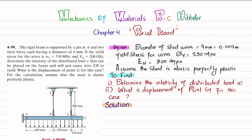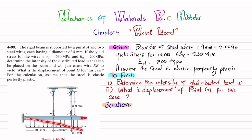Assume the steel is elastic and perfectly plastic. You can see the beam is pin-supported at point A. At points B and C there are two steel wires of 4 millimeter diameter. There is a distributed load over the whole length which is w. You have to find this w as well as the displacement of point G due to this load.